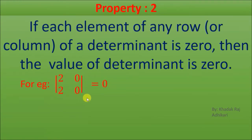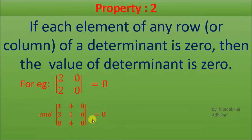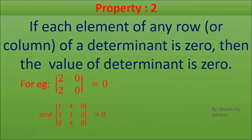Similarly, in this example we can see the elements of the third column are zero. When we expand the determinant, its value also comes out as zero. You can expand and check for yourself. So in this property, if a determinant has any row or column equal to zero, then the value of that determinant will be zero.